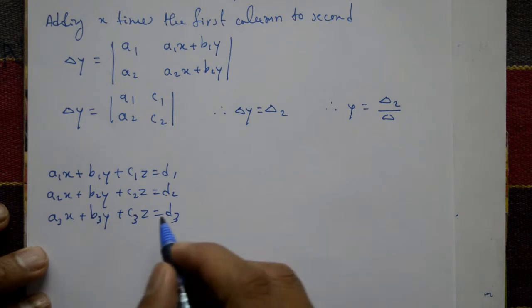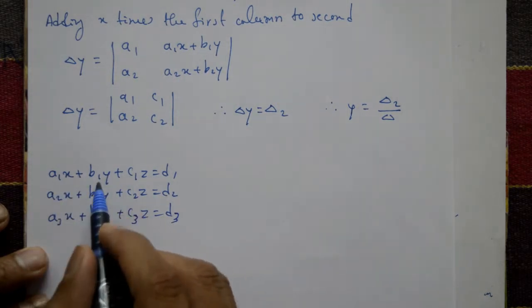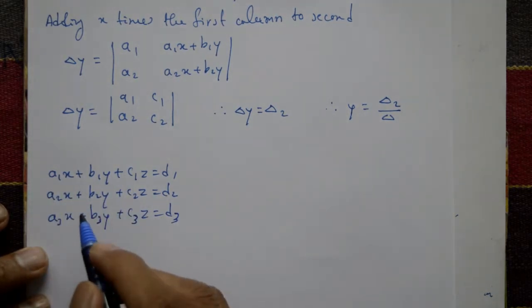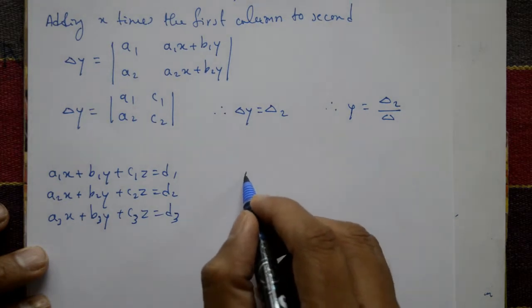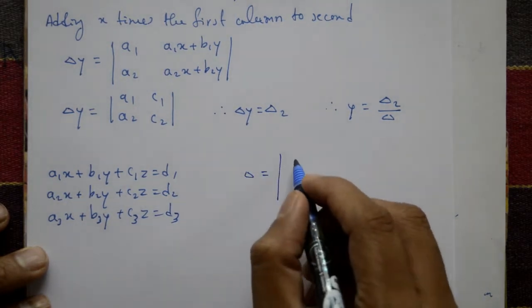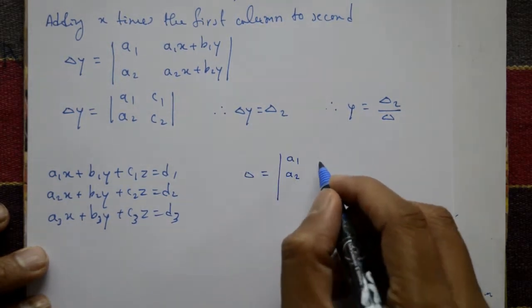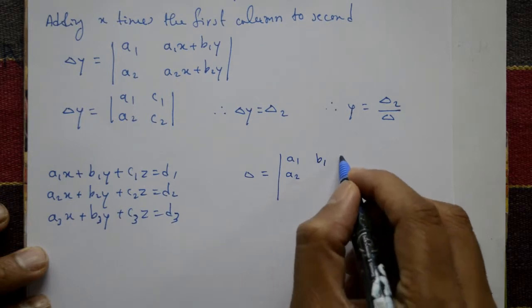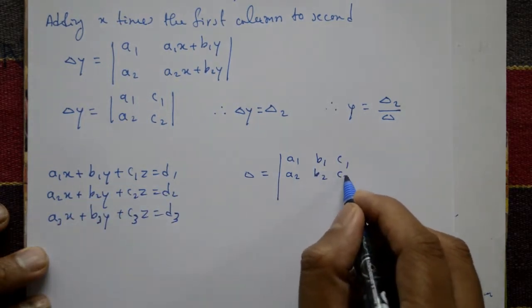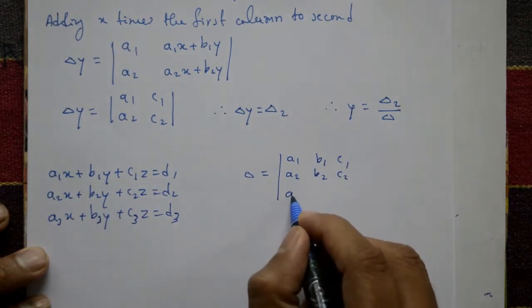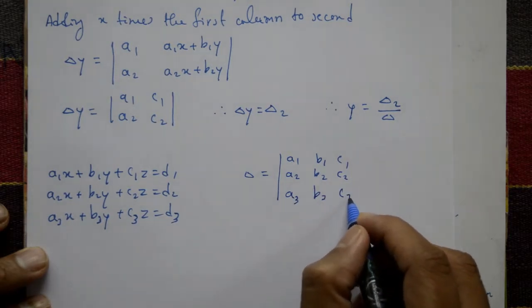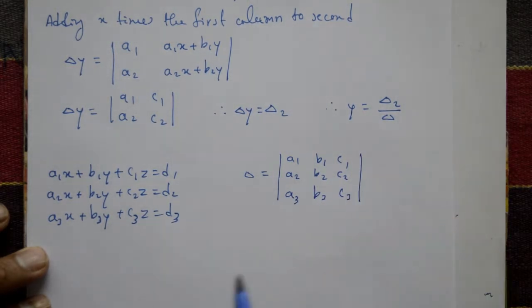Delta means the determinant of coefficients of x, y, z from all three equations. This delta determinant is: a1, b1, c1 in the first row; a2, b2, c2 in the second row; and a3, b3, c3 in the third row.